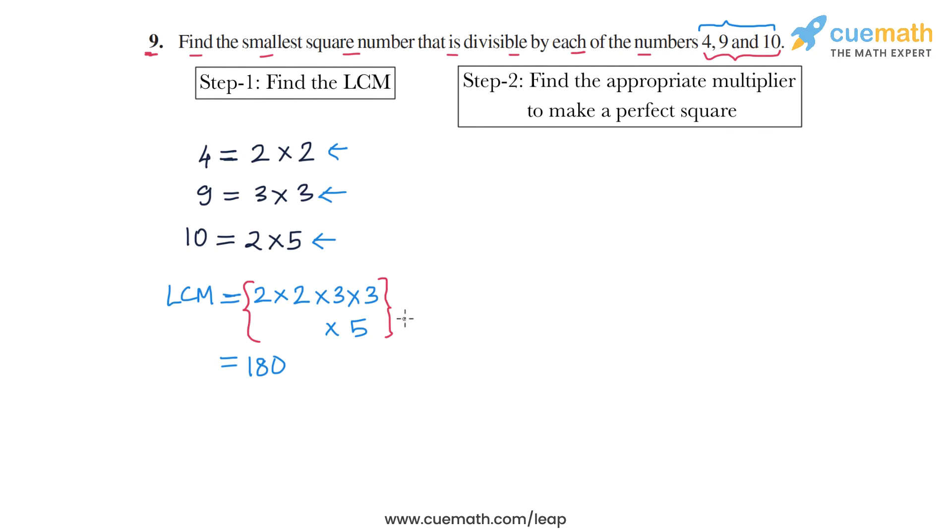In the next step, we have to find an appropriate multiplier by which to multiply this LCM to get a perfect square. So the LCM once again is 2 into 2 into 3 into 3 into 5.